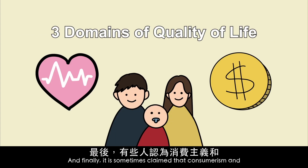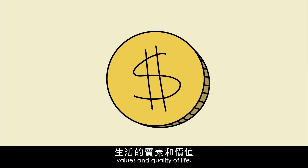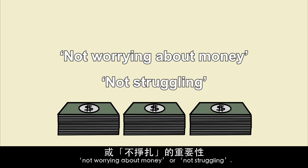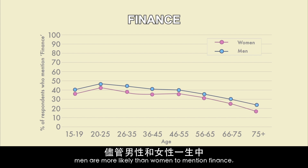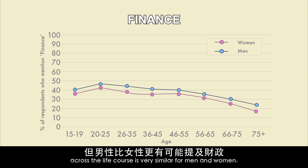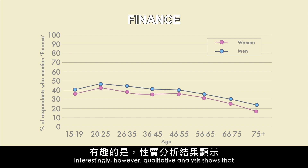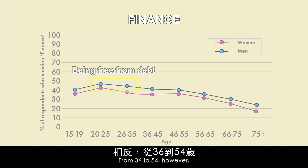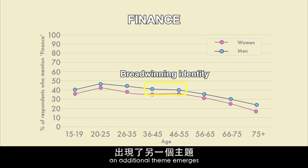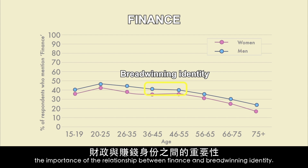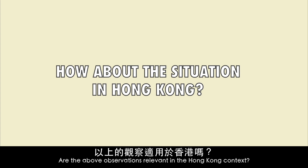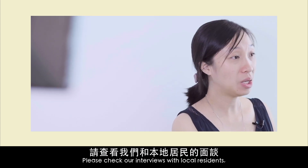Finally, it is sometimes claimed that consumerism and lifestyle aspirations increasingly govern quality of life. The key theme from qualitative analysis highlighted the importance of not worrying about money or not struggling financially. In all age groups, men are more likely than women to mention finance, although the frequency of mentions across the life course is very similar for men and women. Men in the 20 to 35 age range discuss finance in relation to quality of life in the sense of being free from debt, while from 36 to 54, an additional theme emerges illustrating the importance of the relationship between finance and breadwinning identity. How will these observations apply in the Hong Kong context? Please check our interviews among local residents and how they perceive their quality of life.